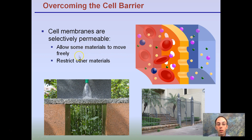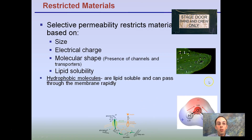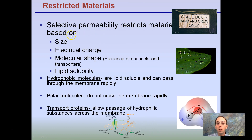We can see here that larger molecules are kept on one side and smaller molecules are let through. Only certain molecules are let through while some are repelled. Selectively permeable restricts certain materials based on their size, their electrical charge, their molecular shape, or their lipid solubility. Any one of these can restrict materials from coming in.